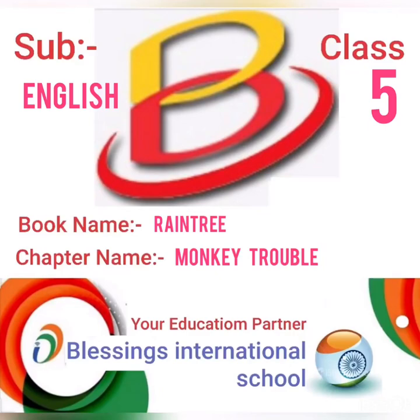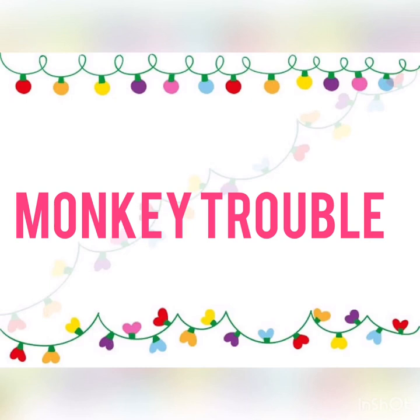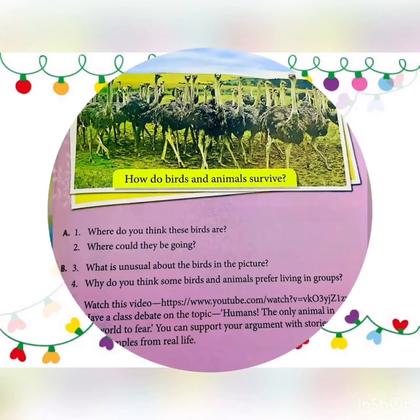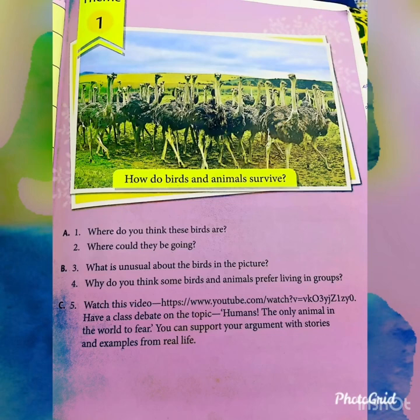Good afternoon students. Today we will start our English literature Chapter One, that is 'Monkey Trouble.' In this chapter, we're going to discuss the theme: how do animals and birds survive. We'll also talk about what kind of pets we have and what sort of relationship we have with them, which is very special and unique.